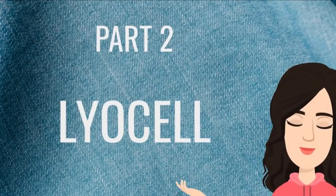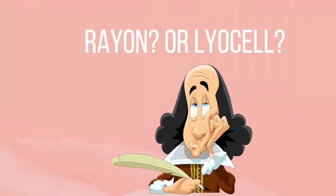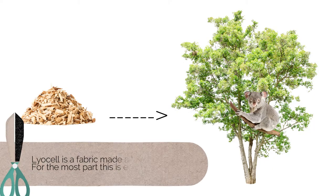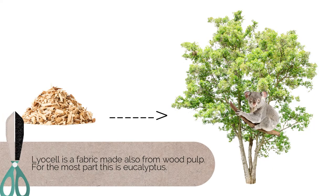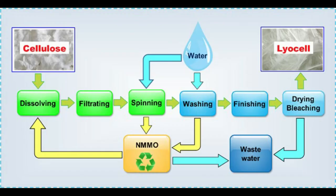Now we will be talking about lyocell. We will find similarities with rayon, but there are still differences. Lyocell is a fabric made also from wood pulp — for the most part, eucalyptus. What makes the difference with rayon is the manufacturing process. Lyocell is made using a solution called NMMO to break down the fibers.